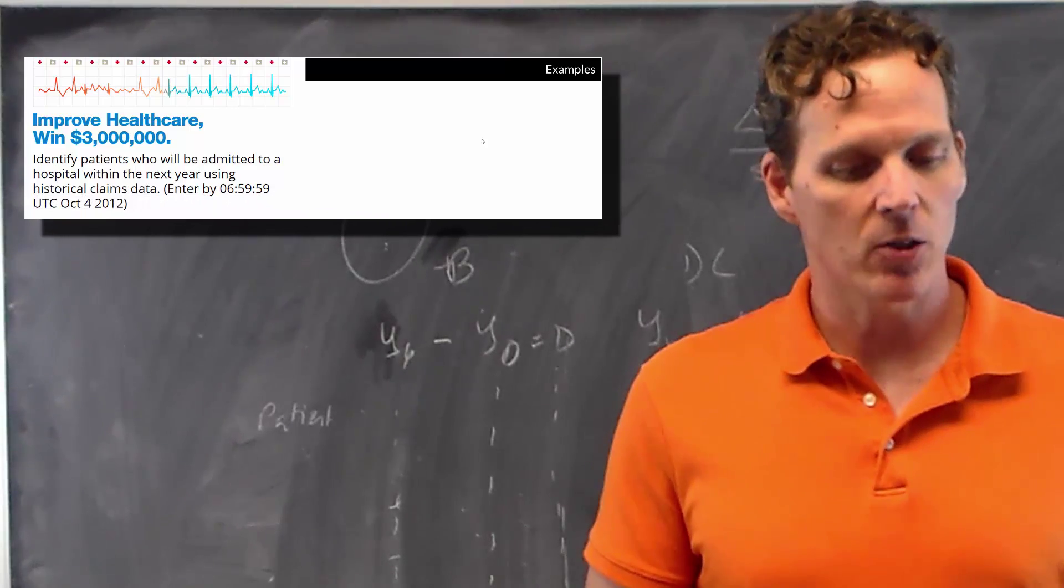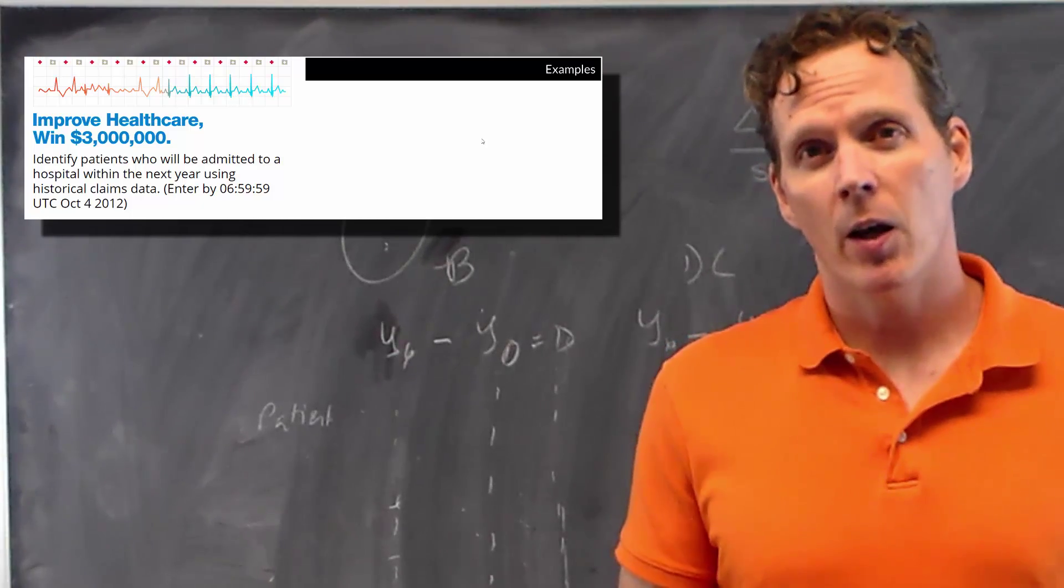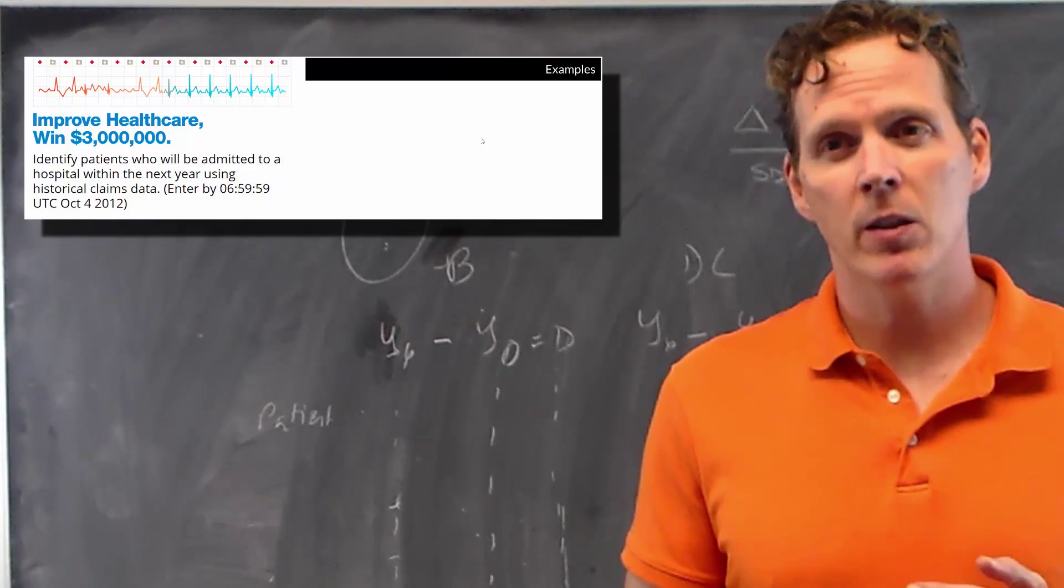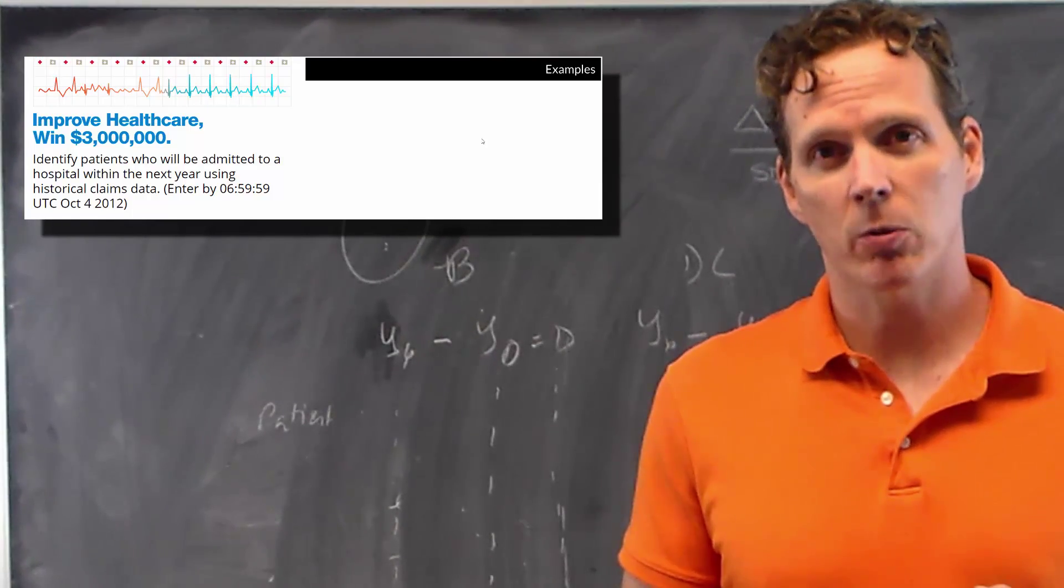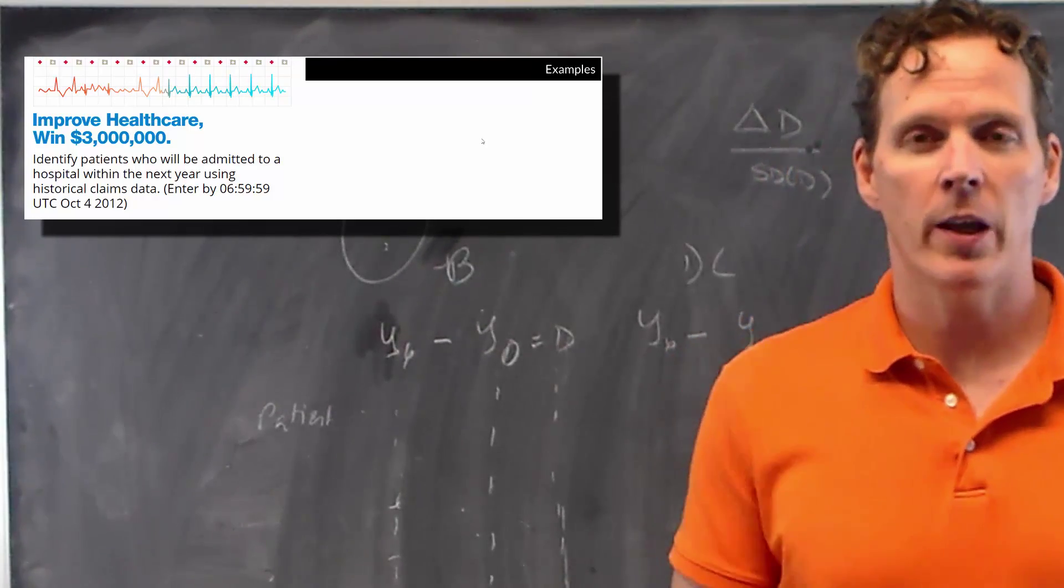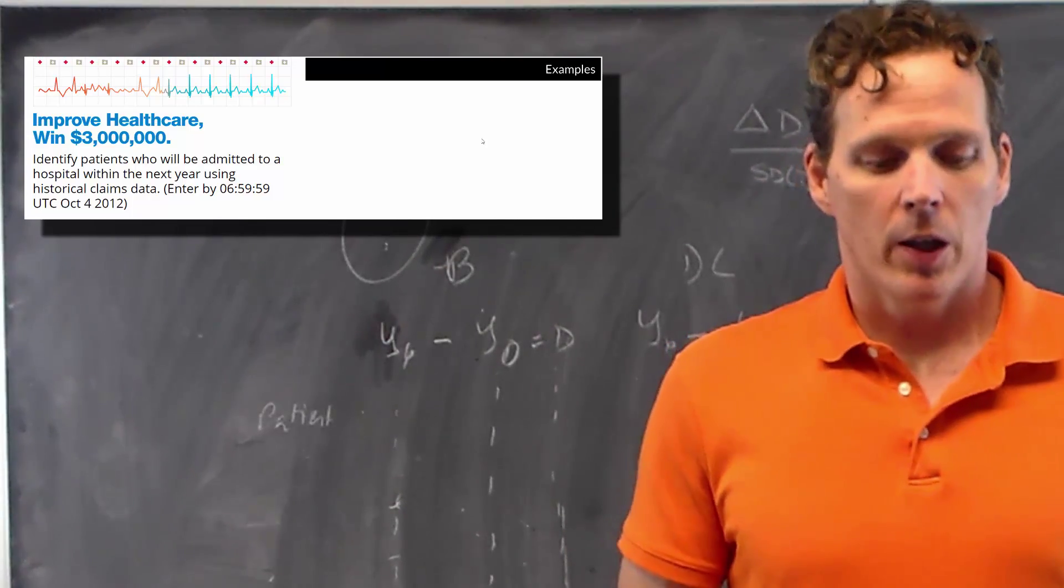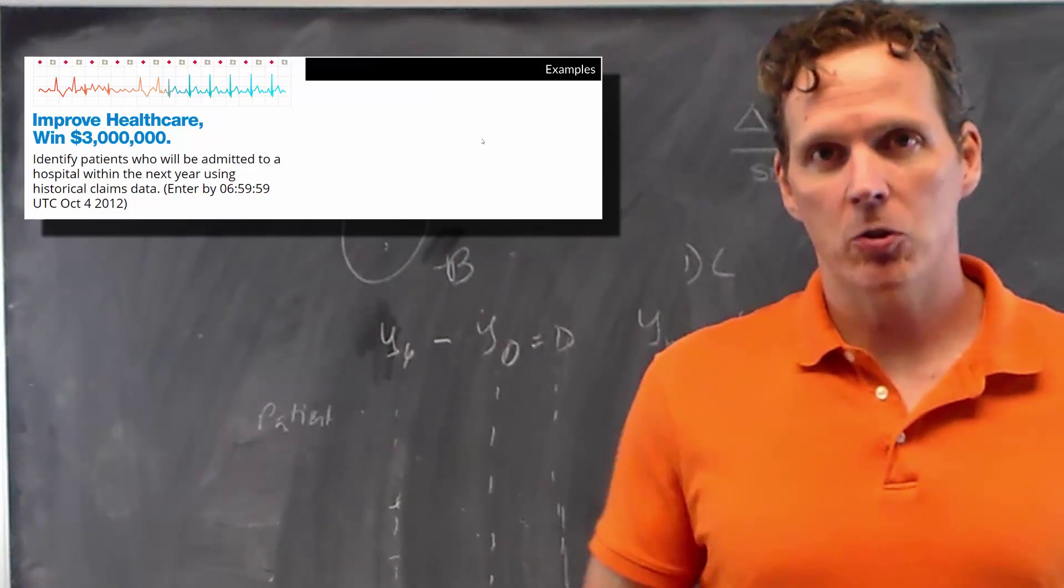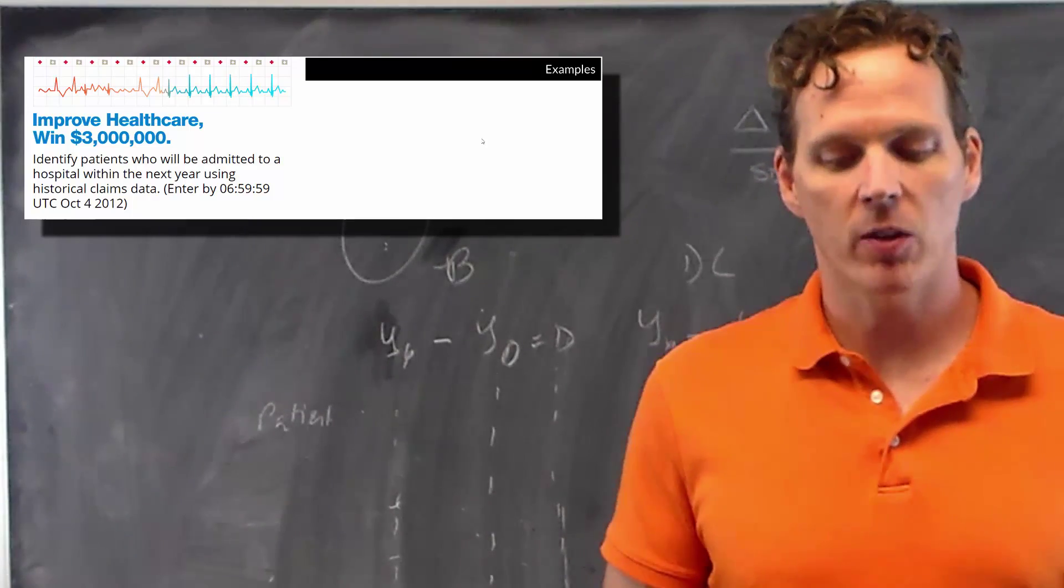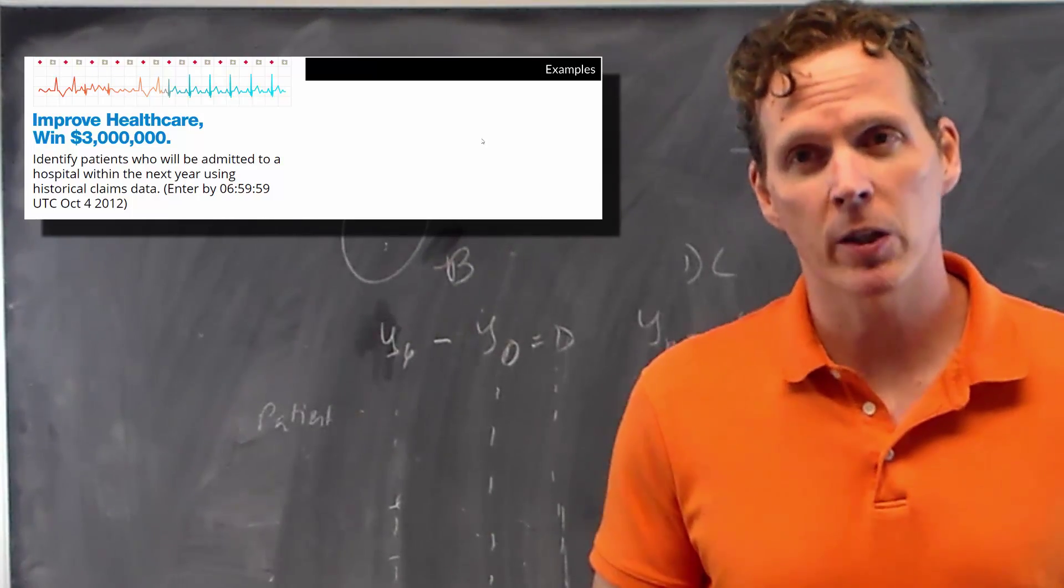Another example that I was engaged in was the Heritage Health Prize. In the Heritage Health Prize, we wanted to identify the number of days that patients would spend in the hospital in subsequent years, given their prior year's hospitalization rates, and a large collection of their insurance claims data that led to their hospitalization and whatever other insurance claims they had. In this case, if you're doing a machine learning exercise, which is how we approach the problem, we wanted to build an automated system for predicting hospital stays from previous claims. All we want, success, is anything that yields reliable predictions for the next year.